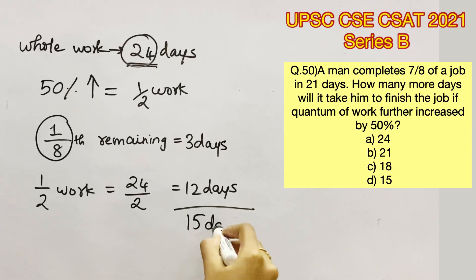So in total, 3 plus 12 would give us 15 days. The man requires 15 days to complete the remaining work. So option D is the right answer.